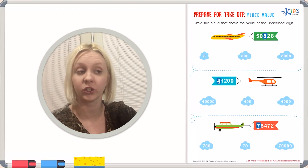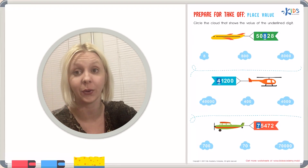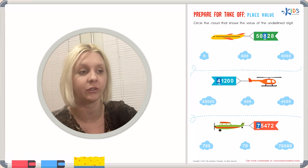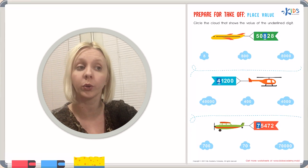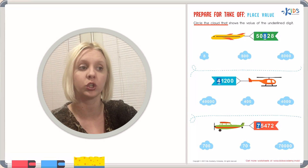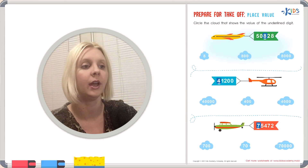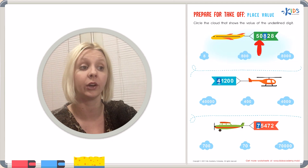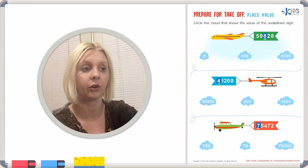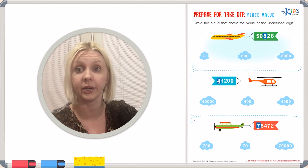Today we have a new worksheet, and the name of our worksheet is called Prepare for Takeoff Place Value. I love place values — these can be lots of fun. What we're going to do is read the directions. It says: circle the cloud that shows the value of the underlined digit. Our airplanes, or our helicopters here, are all carrying a number, and what we're trying to figure out is how much the underlined number, or the number in blue here, represents.